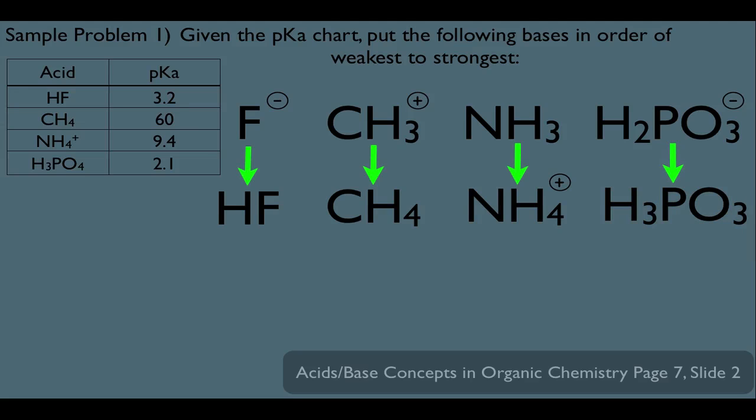Now, notice, all these conjugate acids are on our chart. In fact, let's look up HF. Notice, HF has a pKa of 3.2 according to the chart. CH4 has a pKa of 60. NH4+ has a pKa of 9.4. And H3PO3 has a pKa of 2.1.